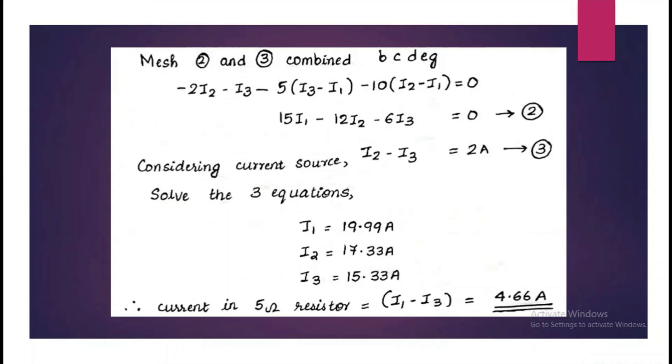Next, we have to find the current through the 5 ohm resistor. Through the 5 ohm resistor, two types of currents are flowing, i1 and i3, which are in opposite direction. So it will be the difference between the two, i1 minus i3 is equal to 4.66 amperes.